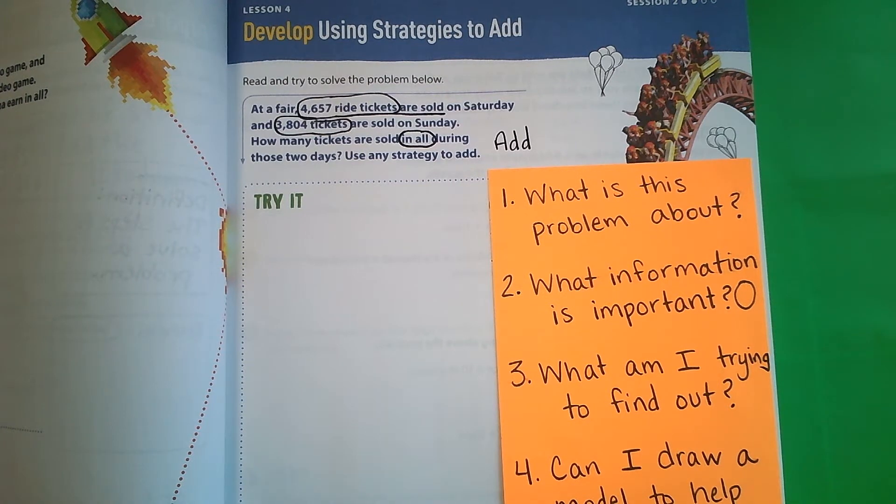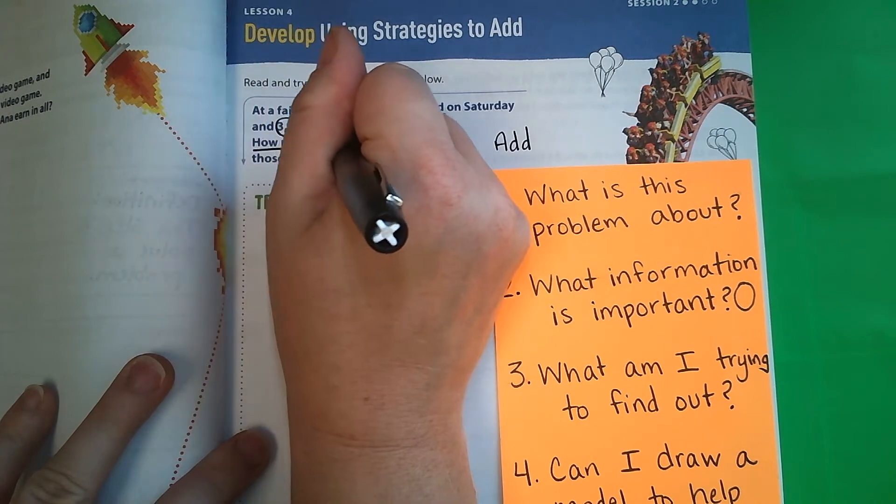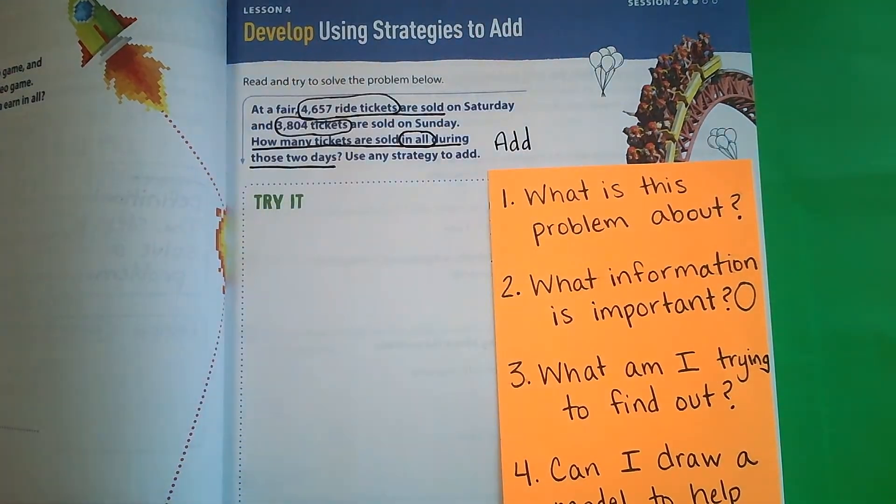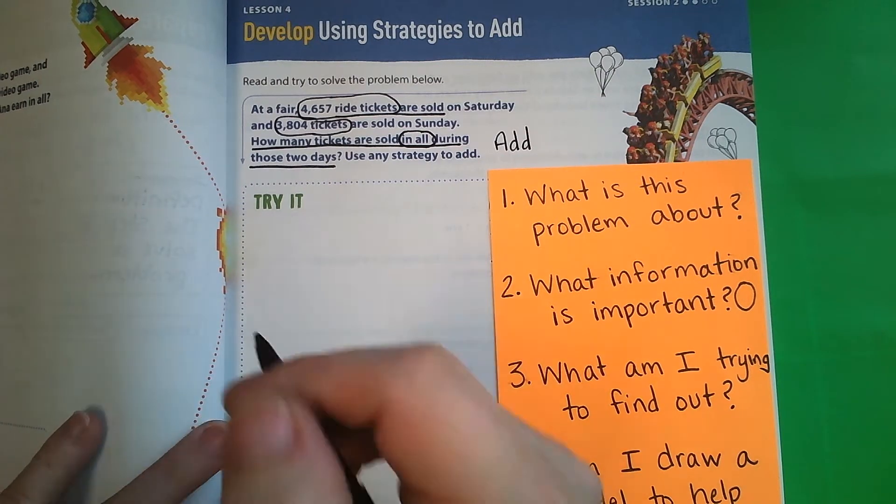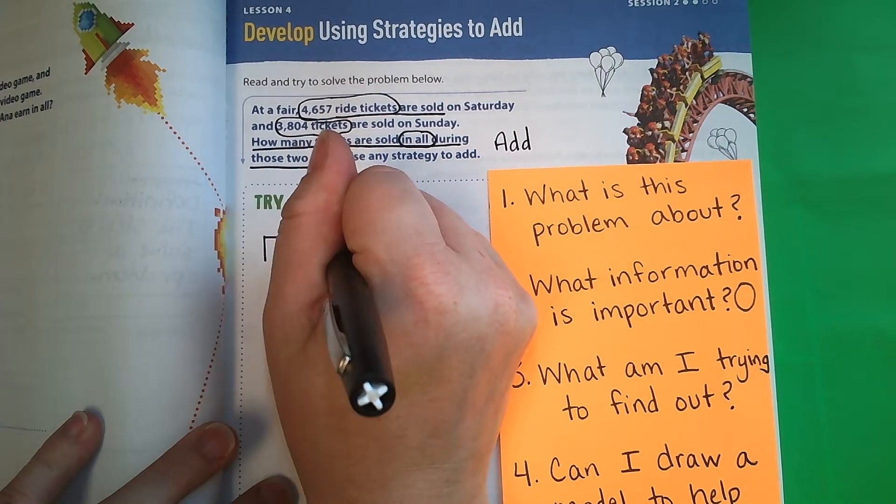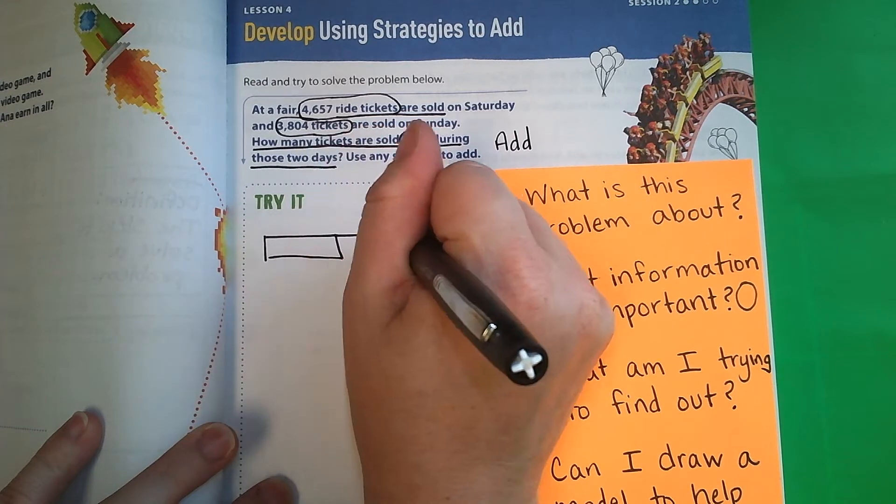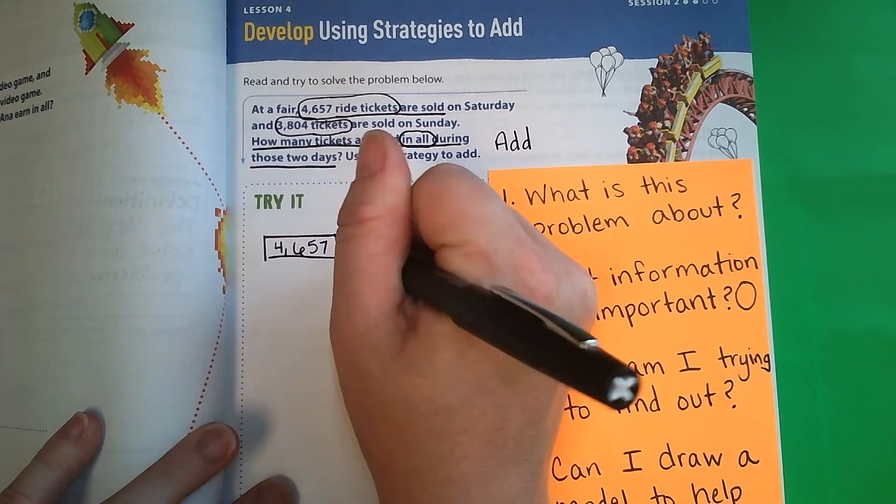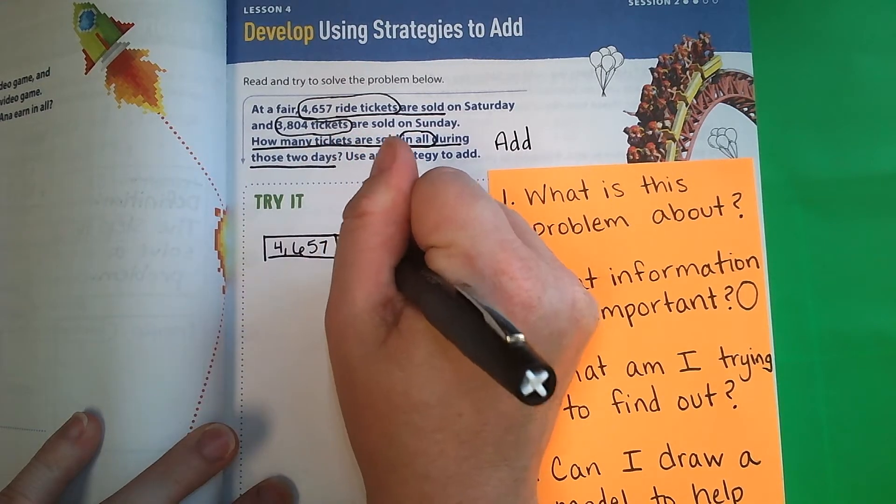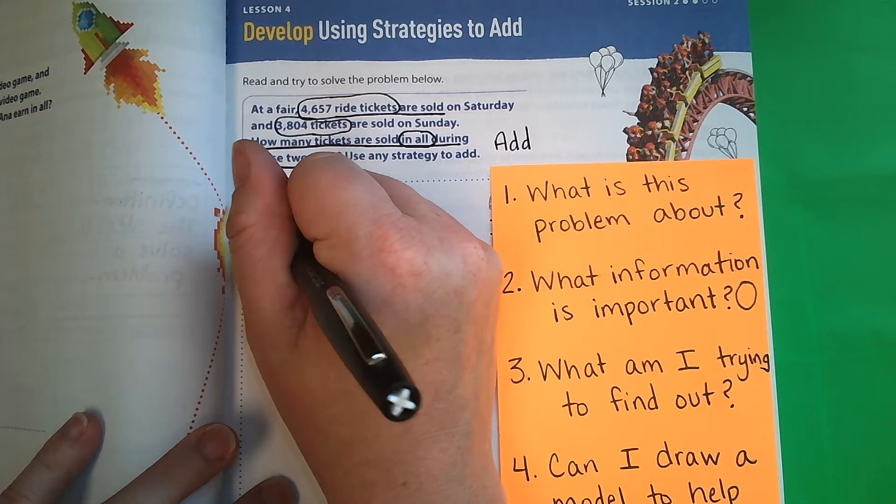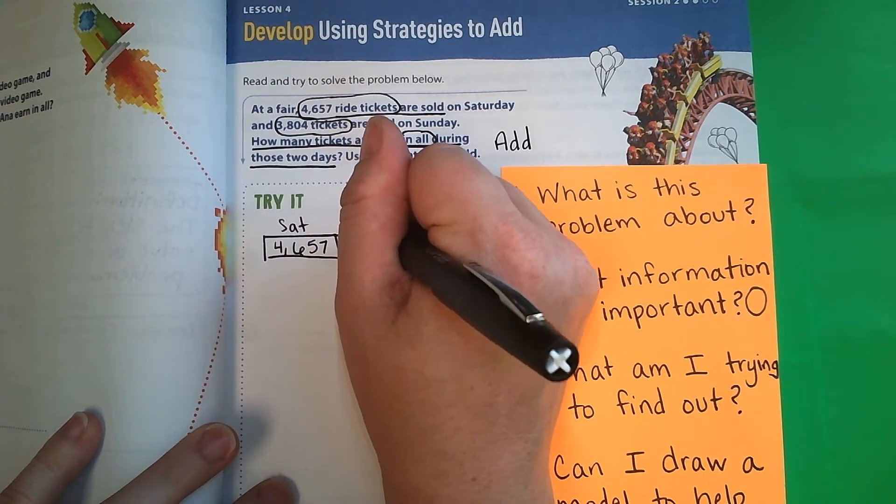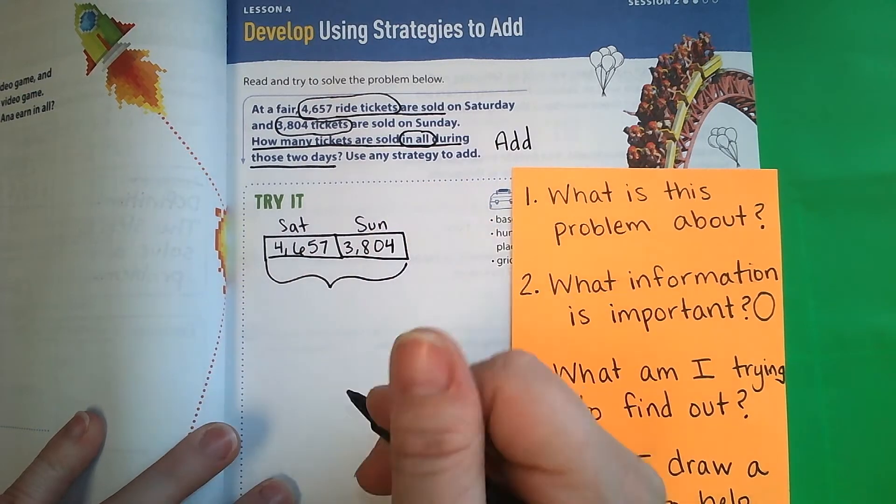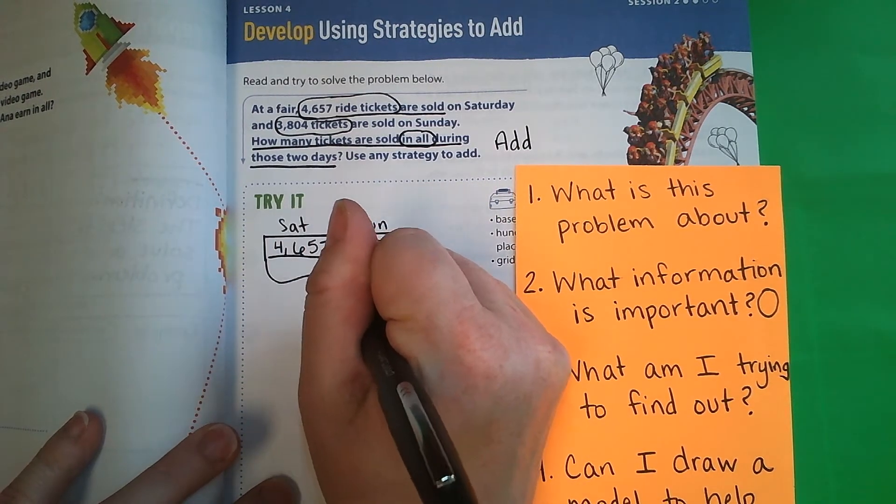What am I trying to find out? I am trying to find out how many are sold in all during those two days. And can I draw a model to solve this problem? Yes, I can. Our model would look like this. It's a bar model, and it would be 4,657, 3,804. This is Saturday, this is Sunday, and we're going to go like that, and this is the total.